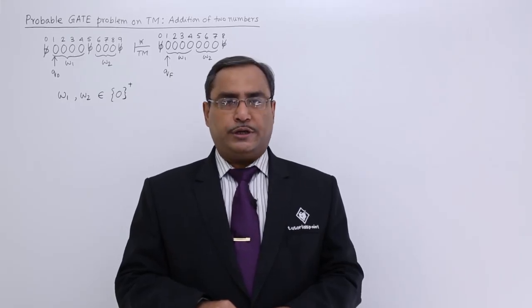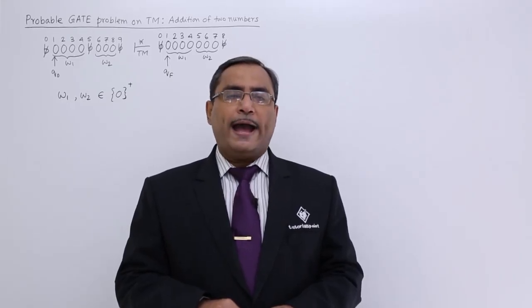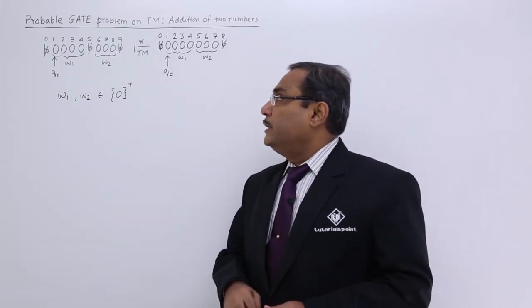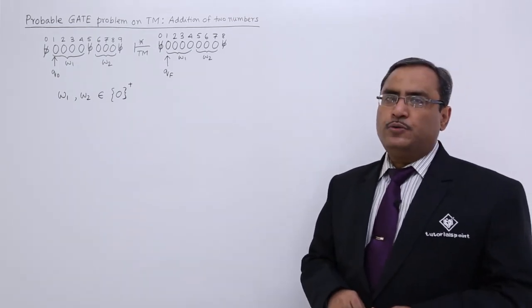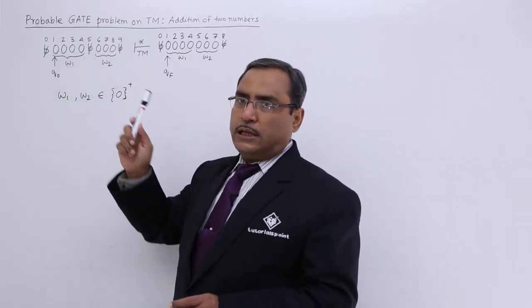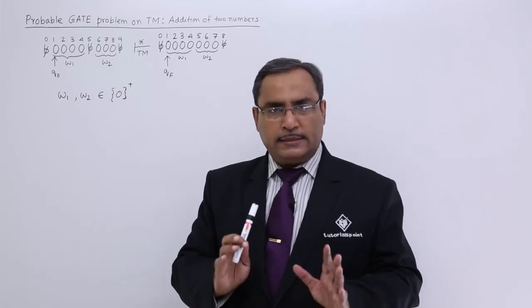Let us solve one problem on Turing machine where we are going to add two numbers. Let us come to the problem. Here the problem is that we are supposed to add two numbers. The number one is consisting of zeros and here I shall count the number of zeros and that is the number.